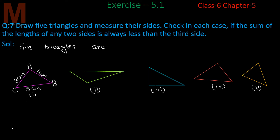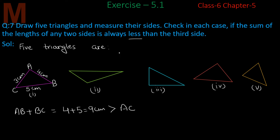Now check BC plus CA: BC = 5 and CA = 3, so BC + CA = 8 cm. We can see this is bigger than AB = 4 cm. Every time we add two sides, the sum is bigger than the third side.